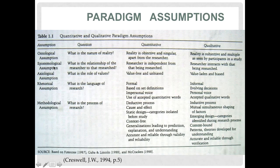From the epistemological perspective, the assumption looks into the piece of knowledge and how we acquire it — what is the relationship of the researcher to the research? In quantitative research, the researcher is independent from that being researched and will not be directly involved or interfere in the data collection approach. In a qualitative approach, the researcher interacts with that being researched, so there will be an influence of the researcher in terms of the data and the methods carried out.